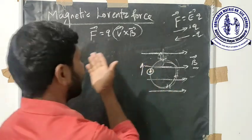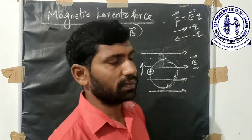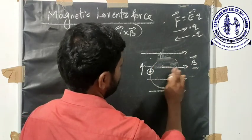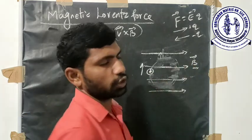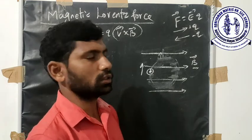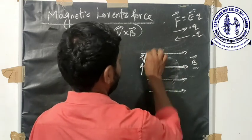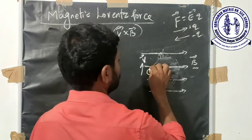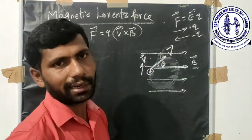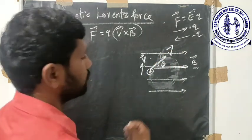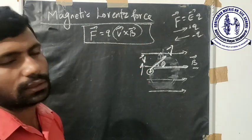Suppose the force factor has been Q into V vector cross B vector. That charge is placed in the magnetic field. Suppose you take the positive charge — it is placed in the magnetic field. What is the velocity V vector? What is the magnetic field B vector? The angle between the magnetic field and the velocity determines the force. The expression for force is: F vector is equal to Q into V vector cross B vector.